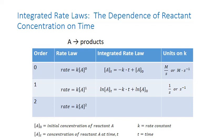Finally, the second-order rate law is: rate equals the rate constant K times the concentration of A raised to the second power. When this is integrated, we get the inverse — one over the concentration of A at time T — equals the positive value of the rate constant times T plus the inverse of the initial concentration of A. In this case, the unit on the rate constant is one over moles per liter over seconds, or moles per liter to the negative one times seconds to the negative one.